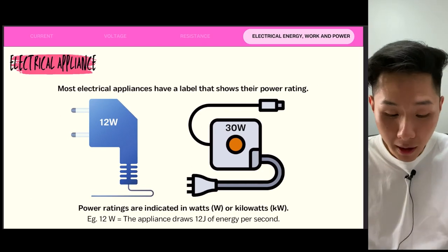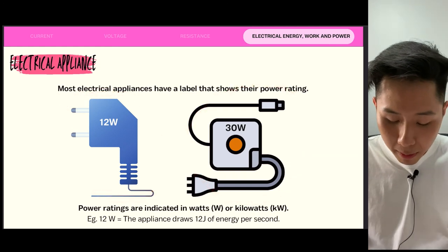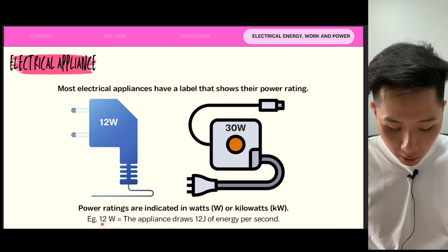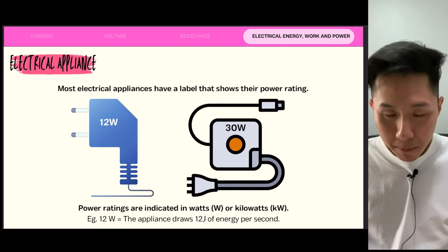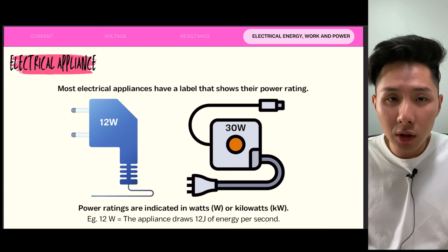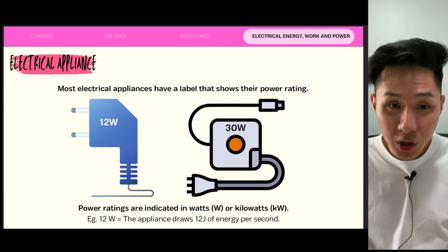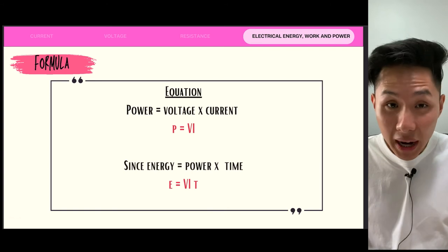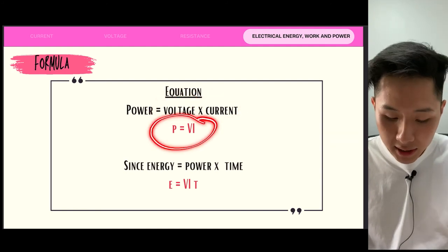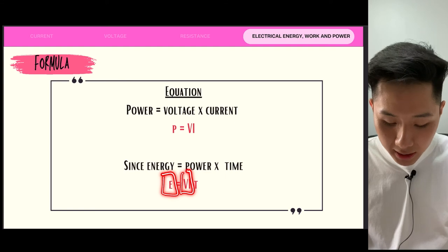Let's look into the last part of this chapter: electrical appliances. A 12-watt charger basically means the appliance draws 12 joules of energy per second. We can measure the power of an electrical appliance using P = VI — voltage multiplied by current. And because energy equals power times time, if you want to calculate energy: E = VI × t.